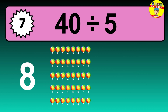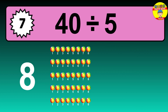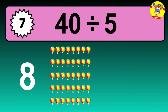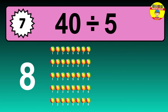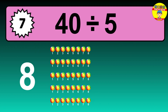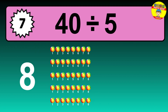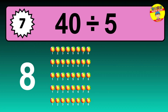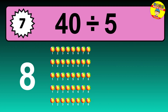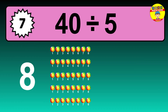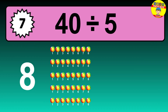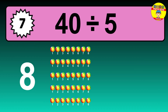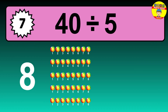Let's go to the solution. Divide the number 40 by 5. Each group contains 5 units, so dividing 40 by 5 results in 8 equal groups. Thus, the result is 40 divided by 5 equals 8.